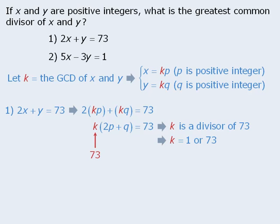Now if k equals 73, we have a problem. If k equals 73, then 2p plus q must equal 1. However, since p and q are both positive integers, it is impossible for 2p plus q to equal 1. So k cannot equal 73.